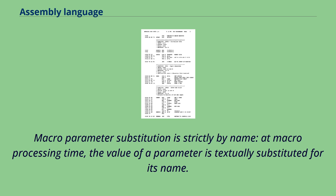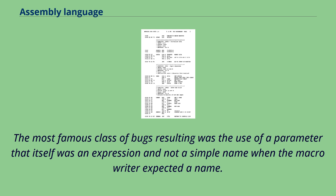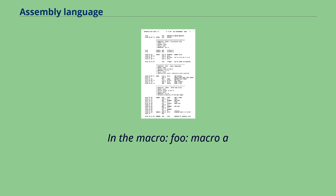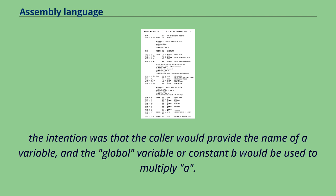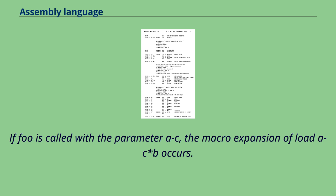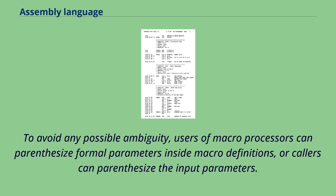Macro parameter substitution is strictly by name — at macro processing time, the value of a parameter is textually substituted for its name. The most famous class of bugs resulting was the use of a parameter that itself was an expression and not a simple name when the macro writer expected a name. In the macro foo(a): load a, b — the intention was that the caller would provide the name of a variable, and the global variable or constant b would be used to multiply a. If foo is called with the parameter a+c, the macro expansion of load a+c, b occurs. To avoid any possible ambiguity, users of macro processors can parenthesize formal parameters inside macro definitions, or callers can parenthesize the input parameters.